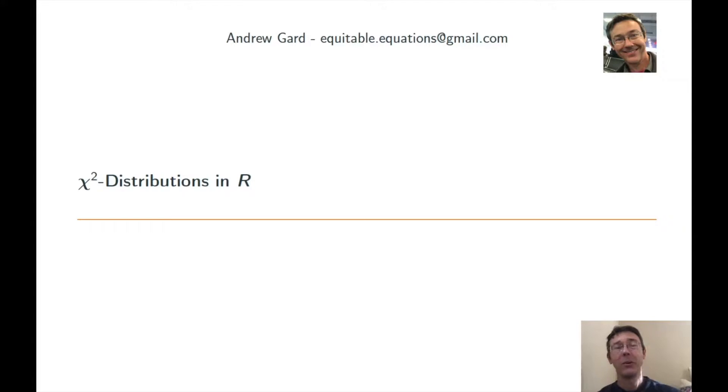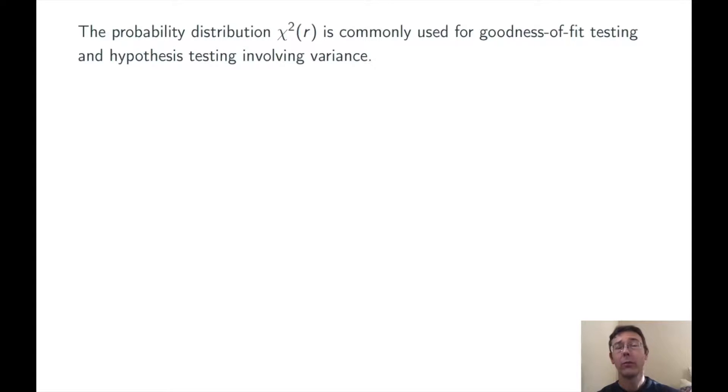Hey everybody. Today we're doing some chi-squared calculations in R. Chi-squared comes up all the time in inferential statistics. We use it for goodness-of-fit testing, hypothesis testing involving variance, among many other applications.